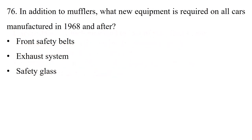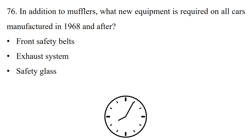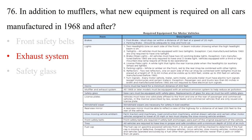Question: In addition to mufflers, what new equipment is required on all cars manufactured in 1968 and after? Option 1: Front safety belts. Option 2: Exhaust system. Option 3: Safety glass. The answer is option 2: exhaust system.